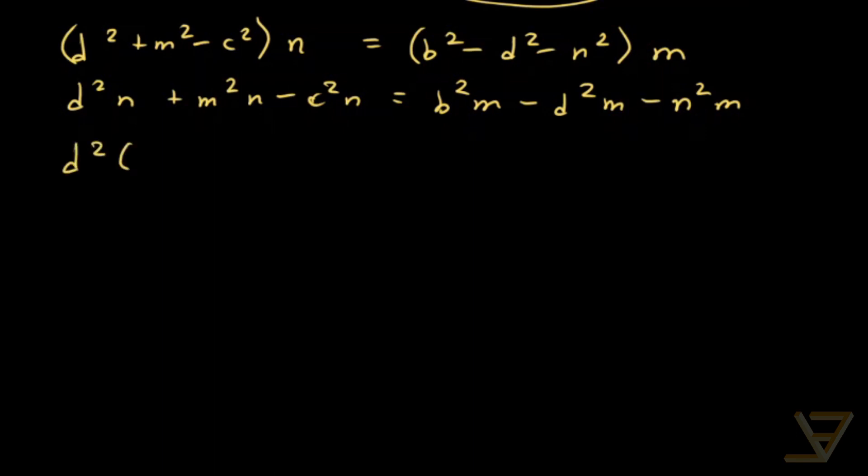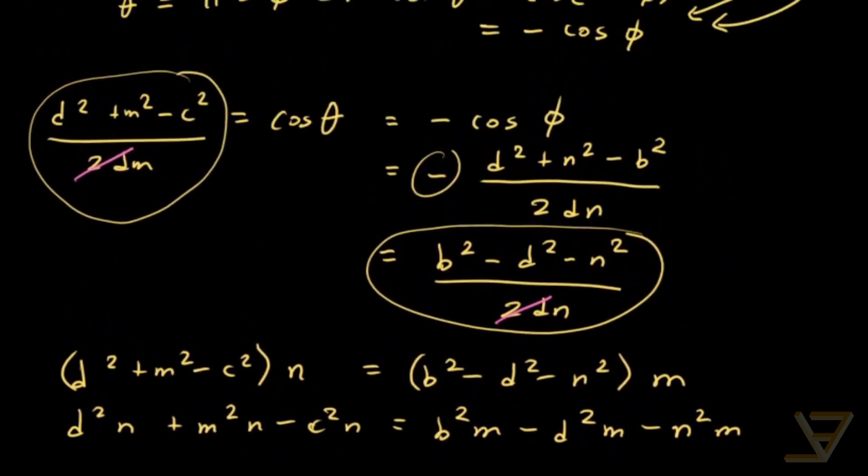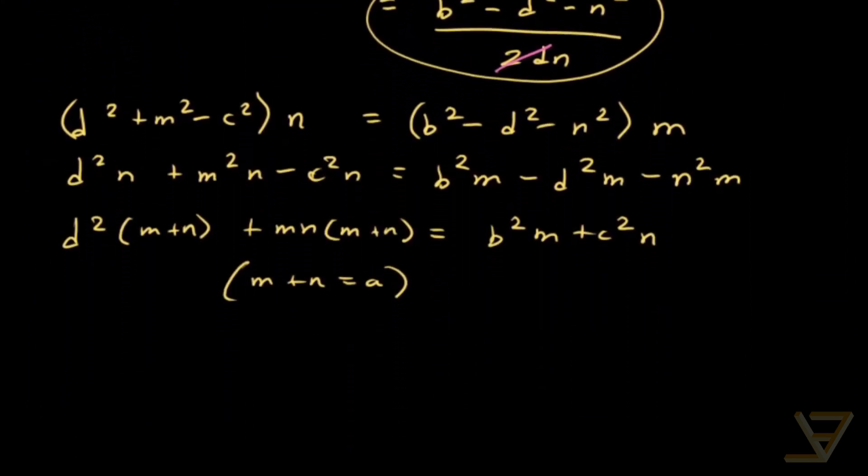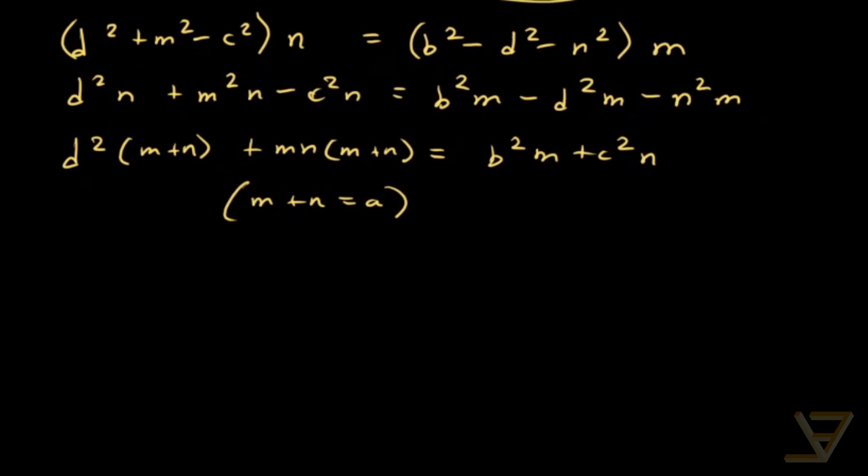Let's put things on different sides according to the signs. So we get d squared times m plus n plus mn times m plus n is equal to b squared m plus c squared n. And remember, m plus n is equal to a. I'll scroll up so that you can see the diagram again over here. So m plus n is equal to a. So we can write this as d squared a plus mna is equal to b squared m plus c squared n.